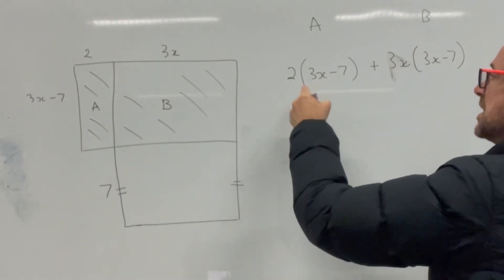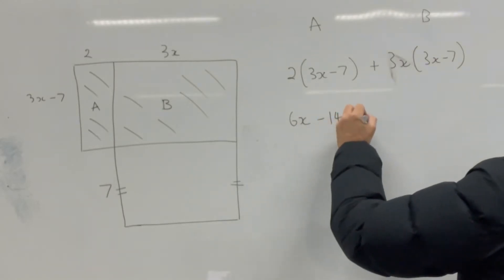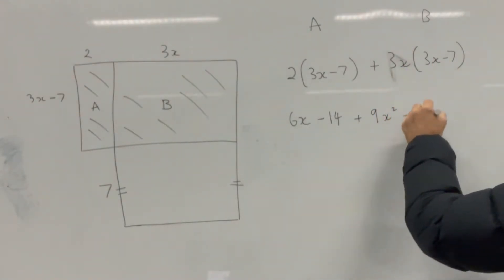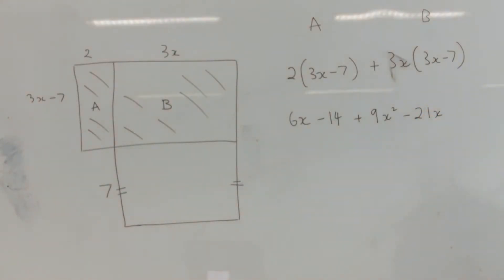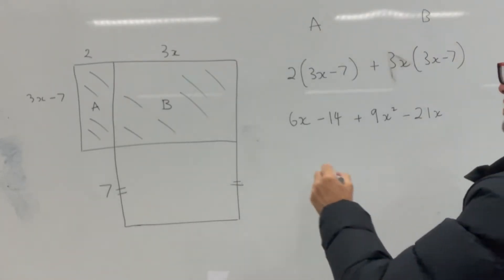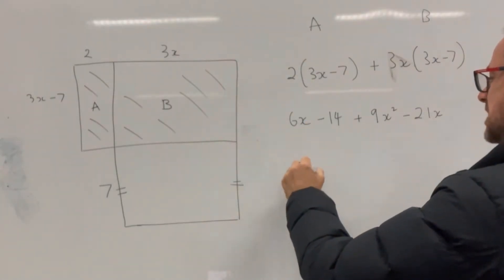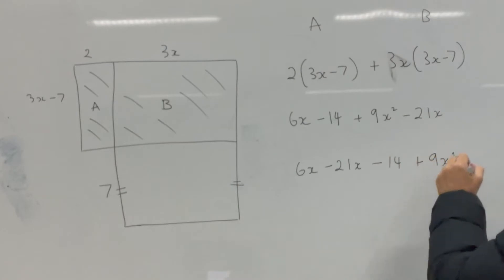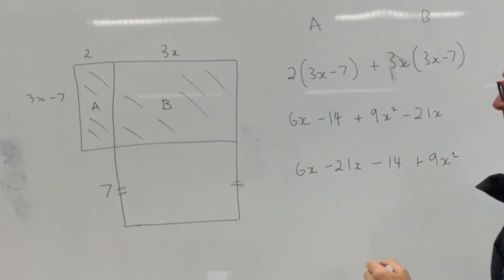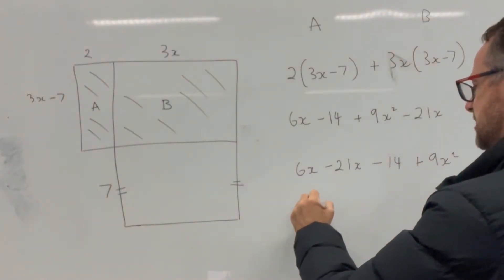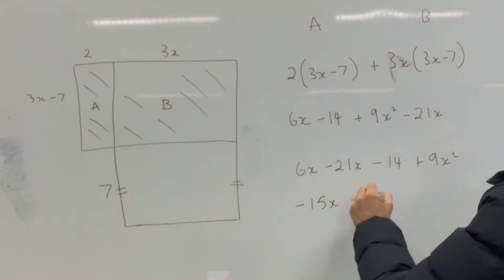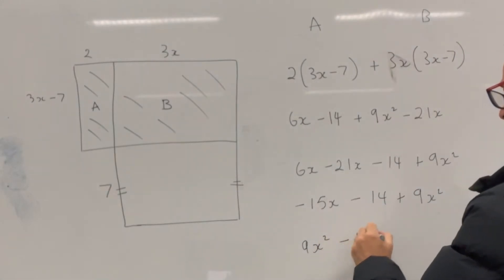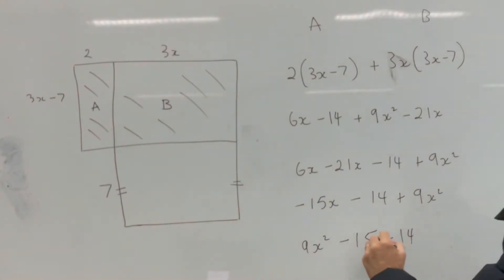So 2 times 3x is 6x, and 2 times negative 7 is negative 14. Plus 3x times 3x is 9x squared, and 3x times negative 7 is negative 21x. Gathering like terms: 6x take away 21x take away 14 plus 9x squared gives us negative 15x take away 14 plus 9x squared. Rewritten in correct order: 9x squared take away 15x take away 14.